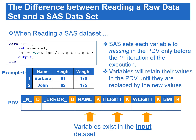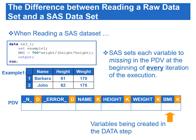There are two types of non-automatic variables: the variables that exist in the input data, and the variables being created in the data step. For variables that exist in the input data, such as name, height, and weight, SAS sets each variable as missing in the PDV only before the first iteration of the execution. These variables will retain their values in the PDV until they are replaced by new values from the input data set. For newly created variables not from the input data set, such as BMI, SAS will set these variables to missing in the PDV at the beginning of every iteration of the execution.